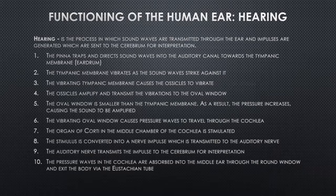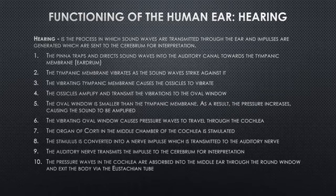Now, how do you hear? The sound travels from the outer ear to the middle ear and then to the inner ear. The pinna traps the sound waves and sends them to the auditory canal. The auditory canal takes those sound waves and sends them to the eardrum. As the sound waves approach the eardrum, they strike against it, causing it to vibrate.